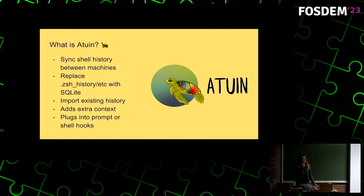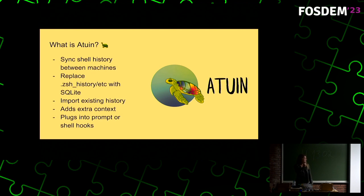We then have functions to import your normal text history into the database. Because databases are a little bit more flexible than flat text files, we can also include some additional context — such as how long a command took to run, whether or not it was successful, which directory it was run in, as well as the shell session. We plug in to your shell via the normal shell hooks, like pre-command, pre-exec, and post-command. In the case of bash, which I do not have positive feelings towards, we do a really horrible hack with the prompt.